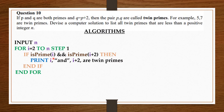We are not starting from 1 because obviously 1 is not a prime number. So we are checking all the numbers from 2 to the value n itself to see if all these numbers are prime numbers.